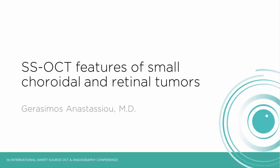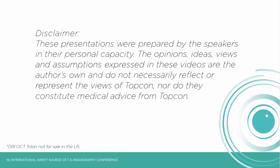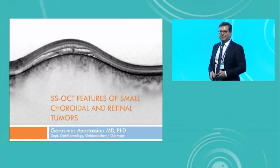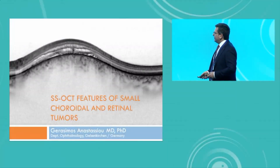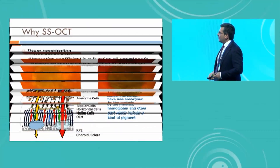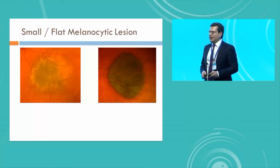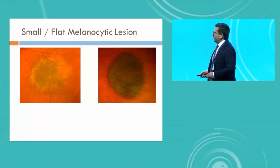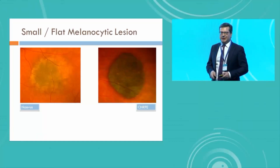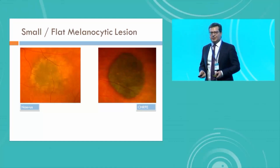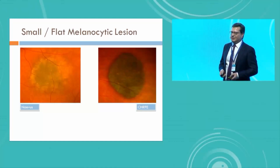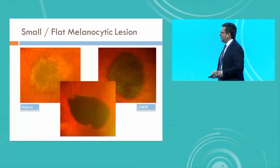Dear colleagues, I will stay in the choroid, but this time I will focus on something completely different. We'll talk about small choroidal lesions in the choroid from clinical practice. We all know we just look at the fundus, and after one second we know this is a nevus and this is hypertrophy of the RPE. In these cases we do not need any sophisticated investigations, but what about in uncertain cases?